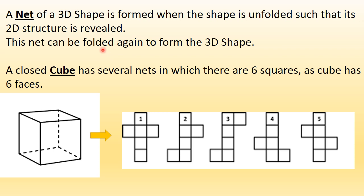I hope everybody knows what a 3D shape is. A 3D shape is a shape which has many faces. For example, you can see this cube. This cube is a 3D shape. It has a front face, a back face, two side faces, a top face and a bottom face. So any 3D shape would have many faces.